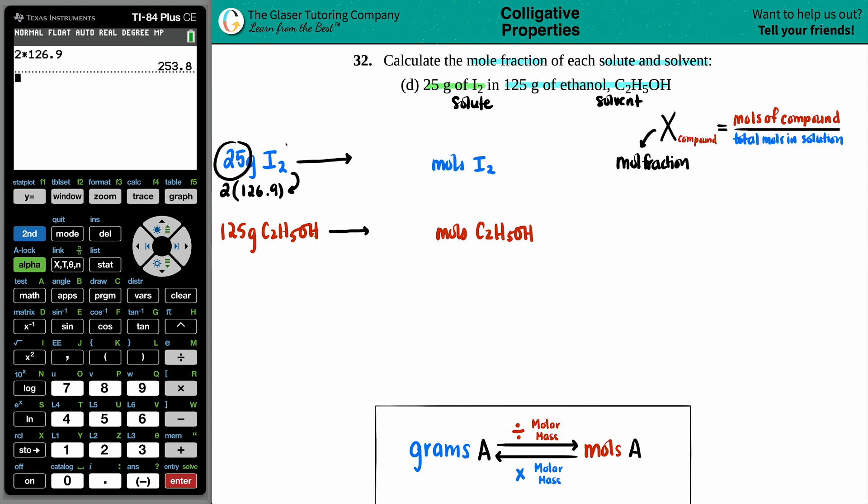So I'm going to take my 25 grams and divide it by 253.8. So 25 divided by 253.8. And I get 0.0985 moles of I2.